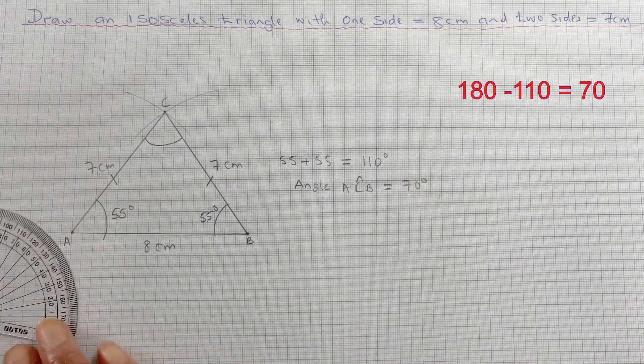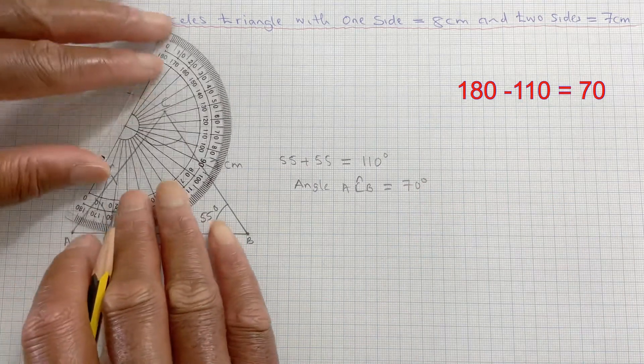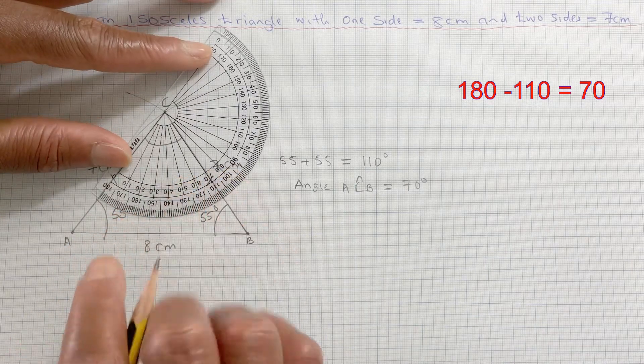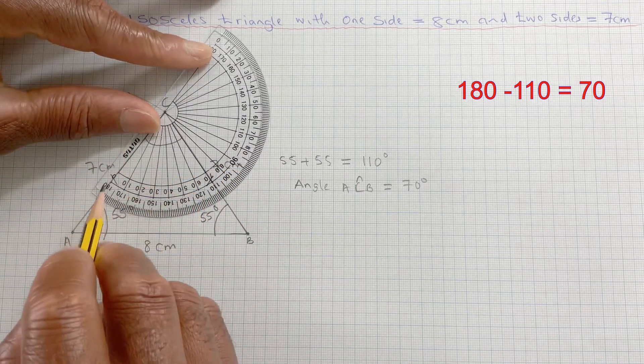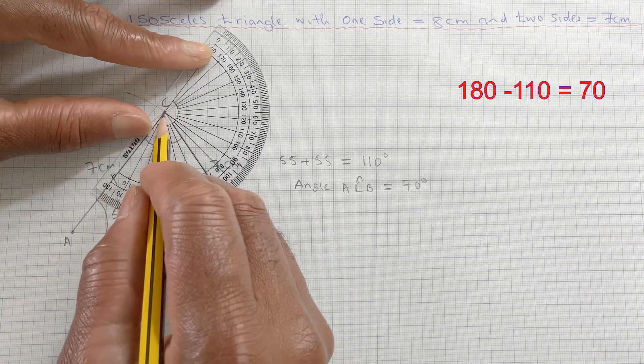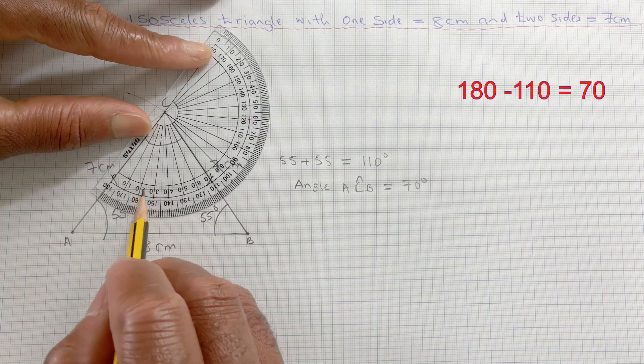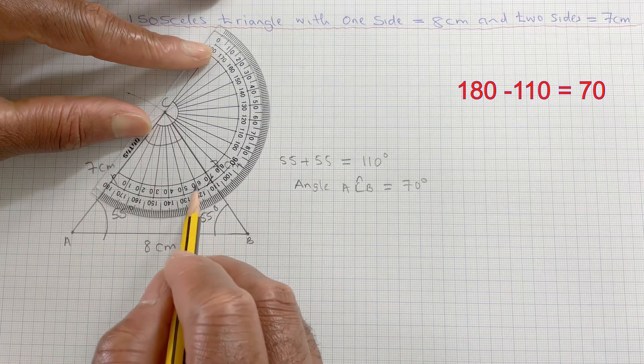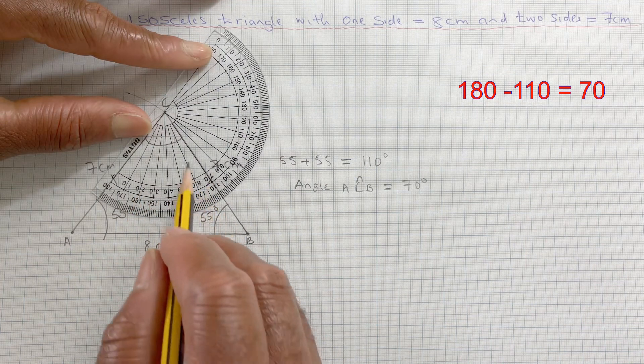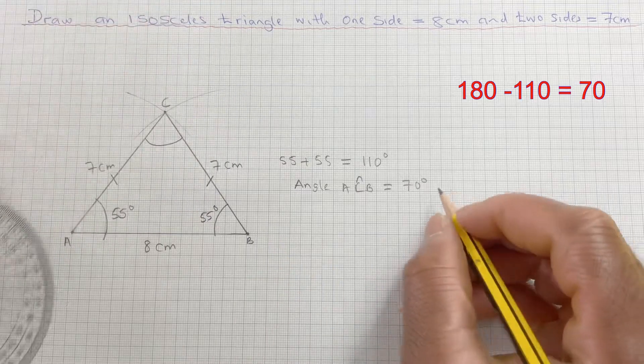How can we check? We need to bring our protractor here. We need to count the angle from 0, because the centre is on that point. So we count from 0, 10, 20, 30, 40, 50, 60, 70. So it's definitely 70 degrees.